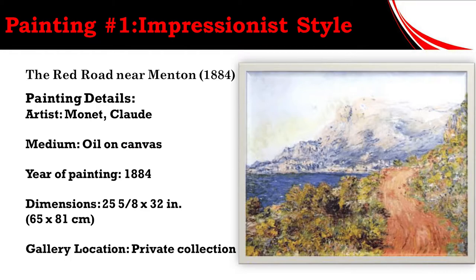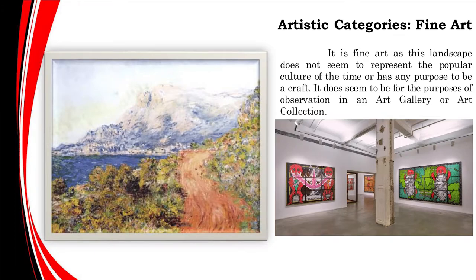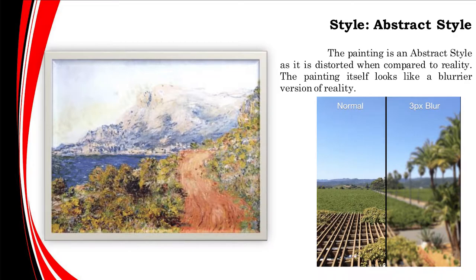First of all, we need to identify the features of this painting. Its artistic role is a landscape as it depicts a snapshot of a road that leads towards a mountain while being surrounded by foliage in the coast. It is fine art as it seems that it is to be presented in a museum. The style is abstract as it looks like a blurry version of reality.